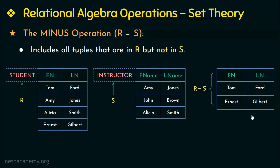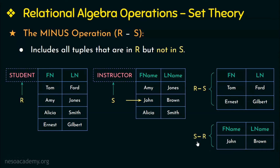Now let us also see the result of S minus R, which gives a relation including all tuples present only in S but not in R. The first tuple from S is also present in R, so it will not be displayed. The second tuple is only present in S, so it will be displayed. The third tuple from S is also present in R, so it will not be displayed. Therefore the resulting relation of S minus R contains only the tuple present exclusively in S.